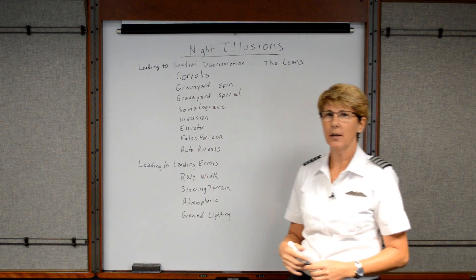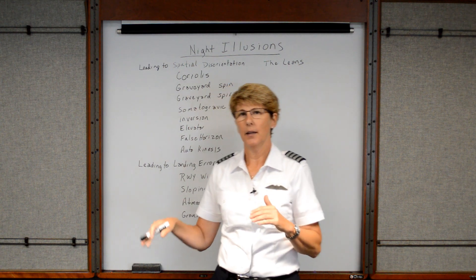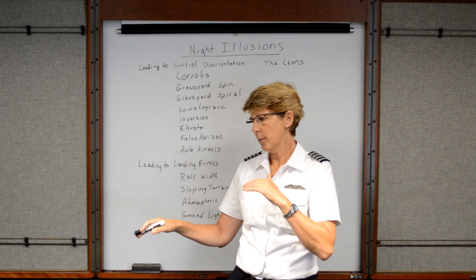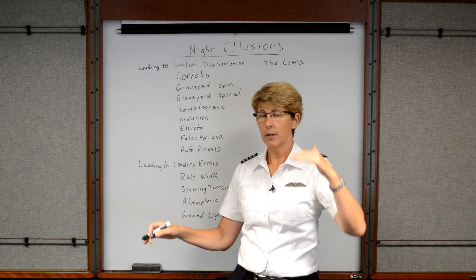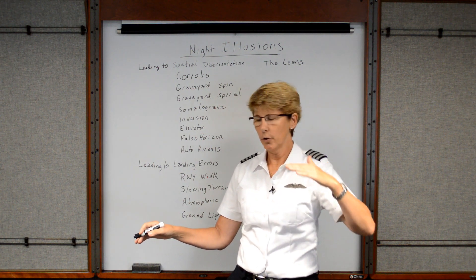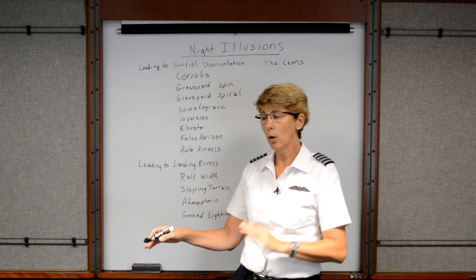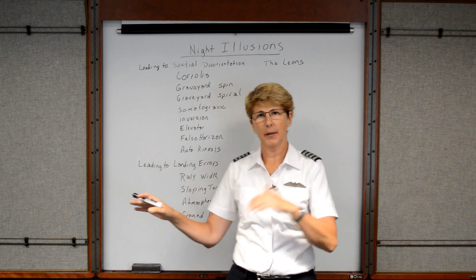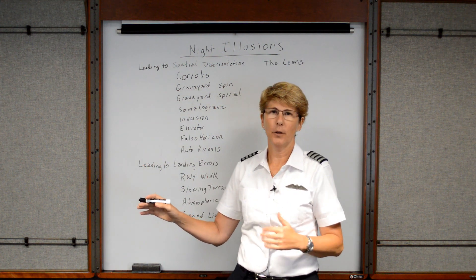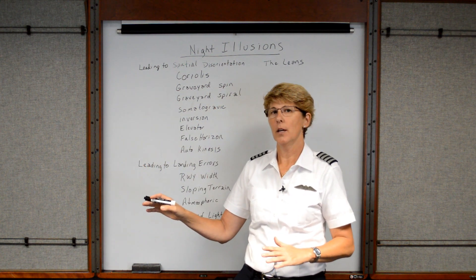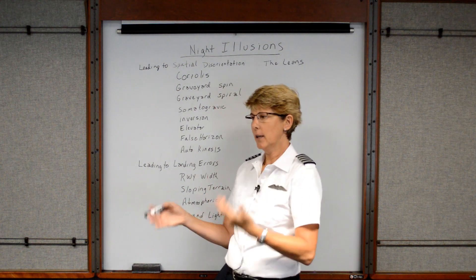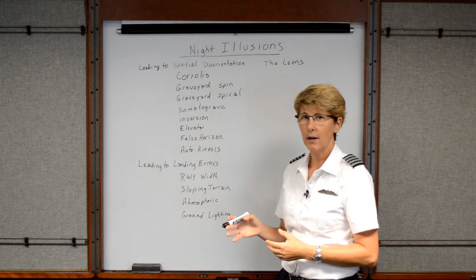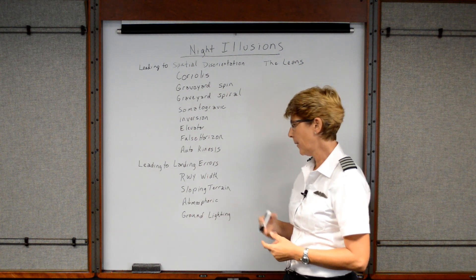Next, let's discuss sloping terrain. If you're coming in for landing and the runway is slightly downhill, that gives you the perception that you're higher than you really are, so your approach path might tend to be lower than it should be. On the other hand, if the runway slopes uphill, it's going to make you feel lower than you really are, and you'll have the tendency to fly too high. You should trust your VASI and PAPI system and try not to get caught in that illusion.